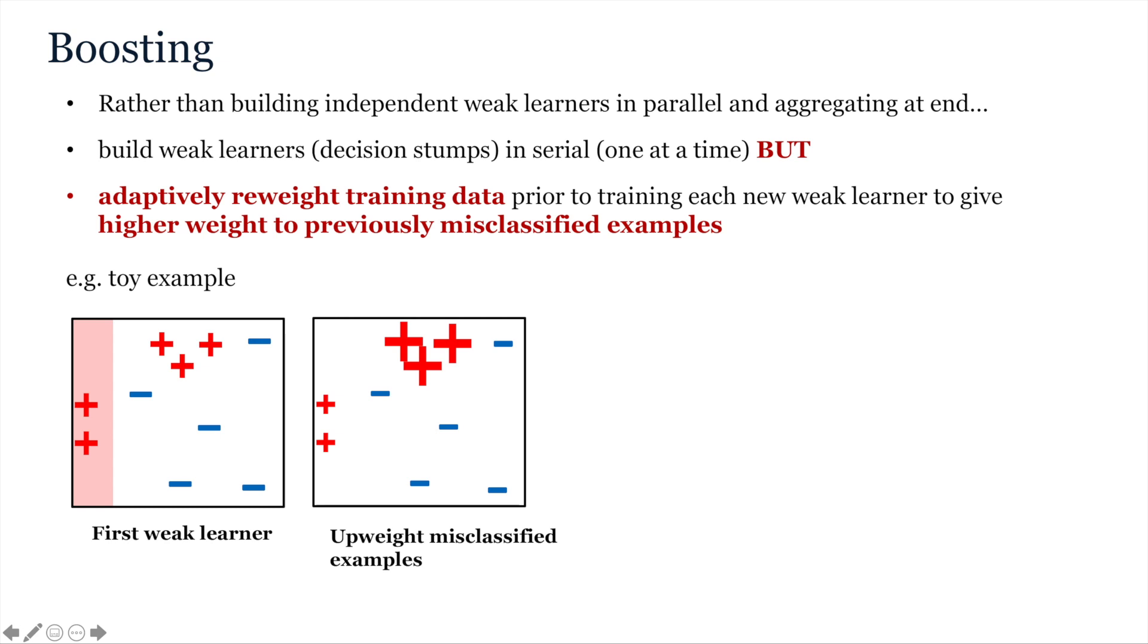The way that boosting then works is that in the next iteration, those examples that got misclassified subsequently get up-weighted in the loss estimation at the next iteration. We visualize this by making them bigger in the figure.